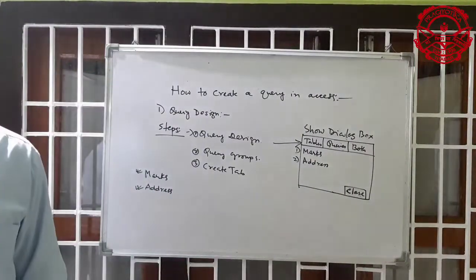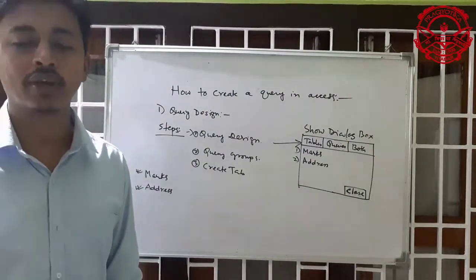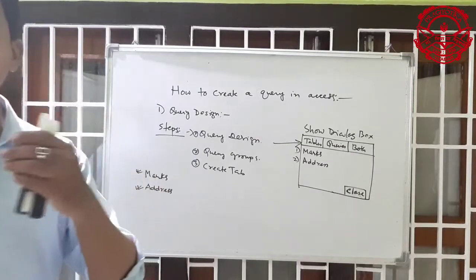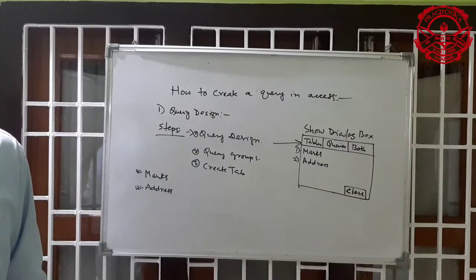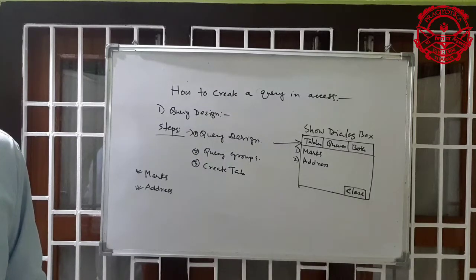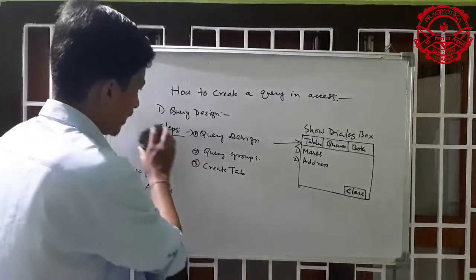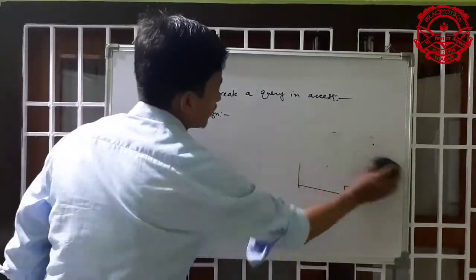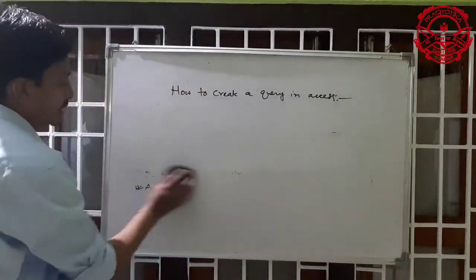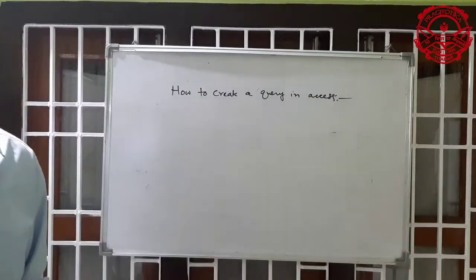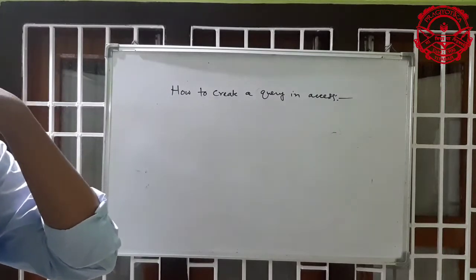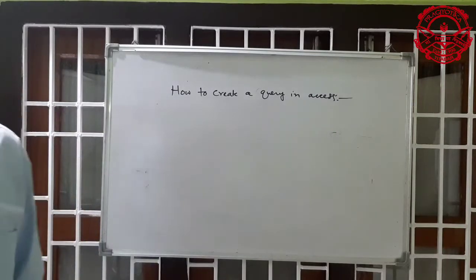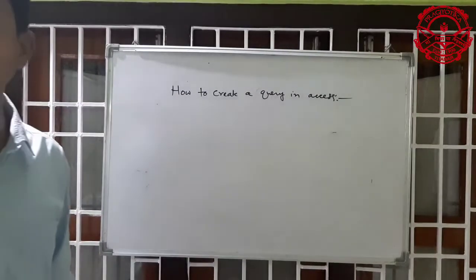Number four: select the fields to be included in the query using one of the following options. In the query design grid, you can double-click on a field and it will become an available column in the query grid. The query design window will appear and in it you can see the student table.